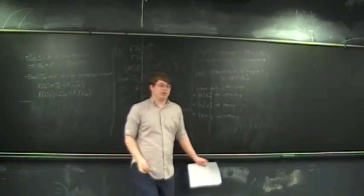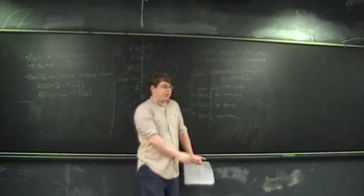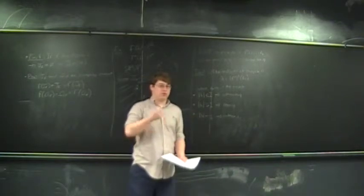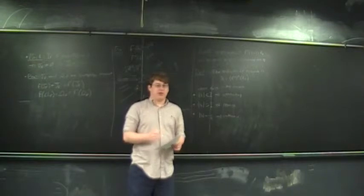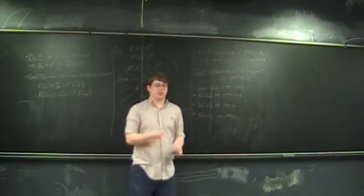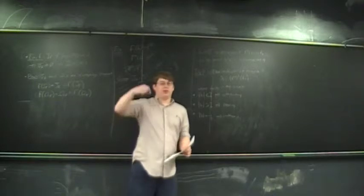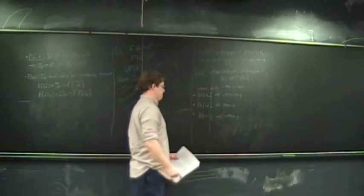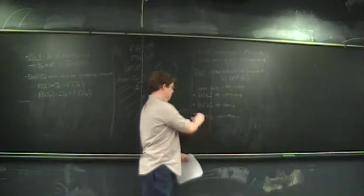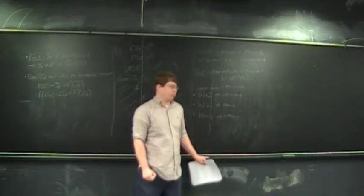We classify cycles by their multiplier into three types: attracting, repelling, and indifferent. This multiplier tells us what's locally going on. If the derivative is really small, points are attracted to that fixed point locally — you can make this rigorous via Taylor series. If the derivative is bigger than 1, nearby points get larger and go away from the fixed point. The indifferent case is complicated, has many subcases, and is not completely well understood even now. We'll largely ignore it.